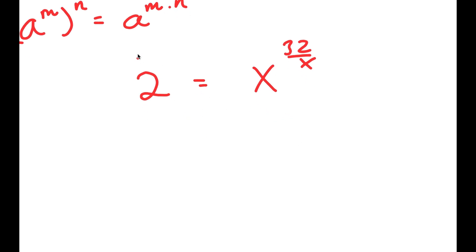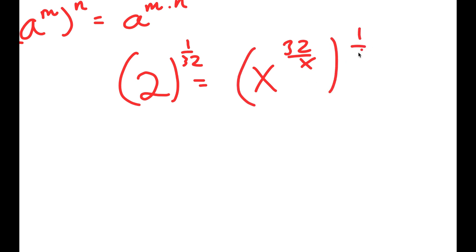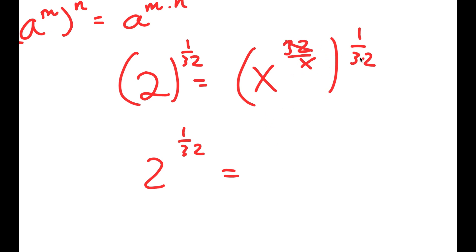From here, I'm going to take the power of 1 over 32 on both sides — we're doing this to get rid of the 32 on the right-hand side. So on the left I have 2 to the power of 1 over 32, and on the right those two cancel out, leaving x to the power of 1 over x.